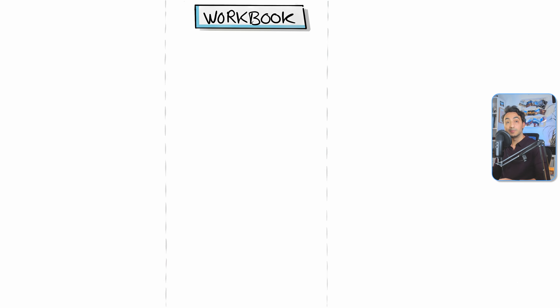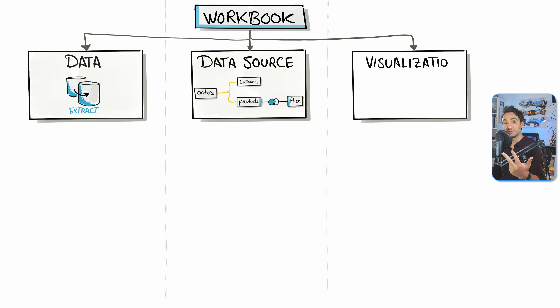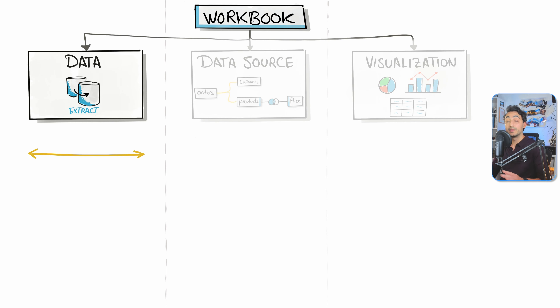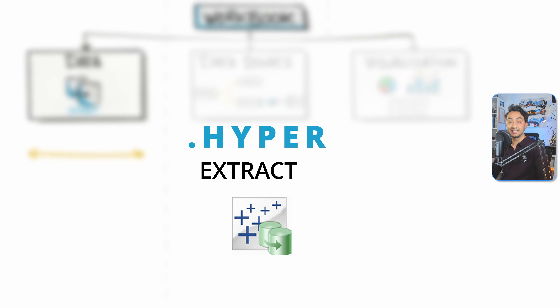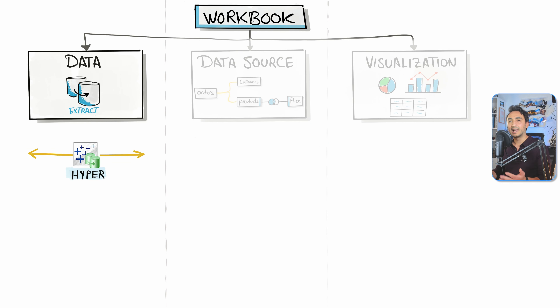As we learned, the Tableau workbook contains three things: the extract, the data source, and the visualizations. There is a file type for each combination depending on your requirements. For example, if you want to share only your data without anything else — no data source, no visualizations — then you can send an extract in the Hyper format.